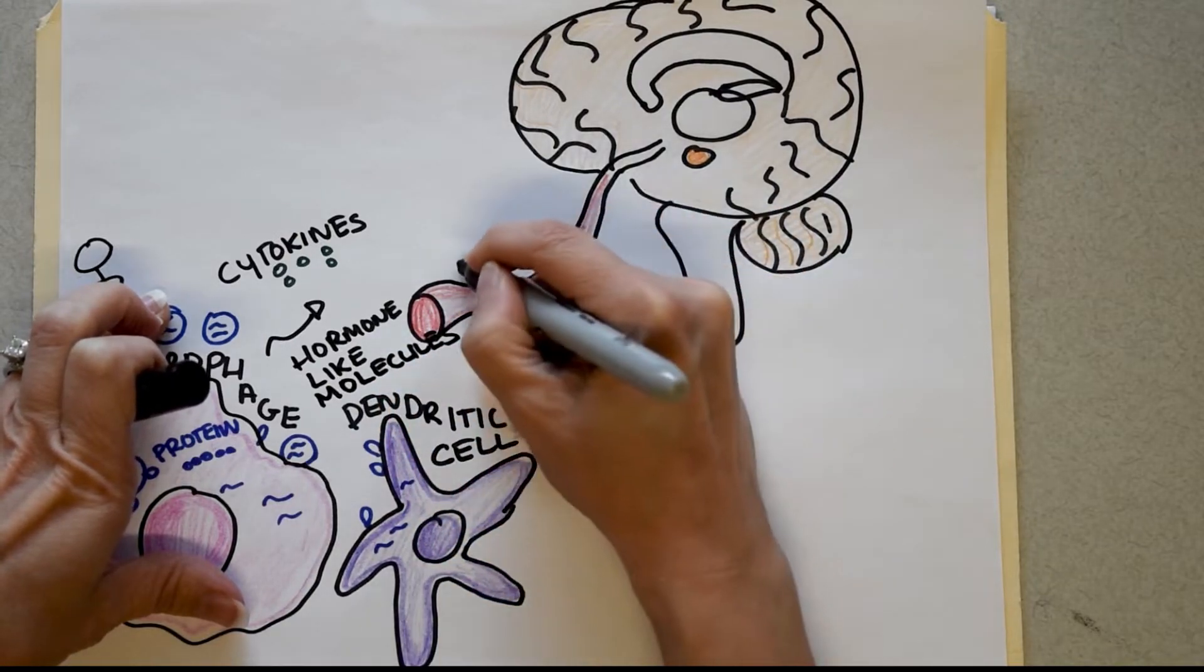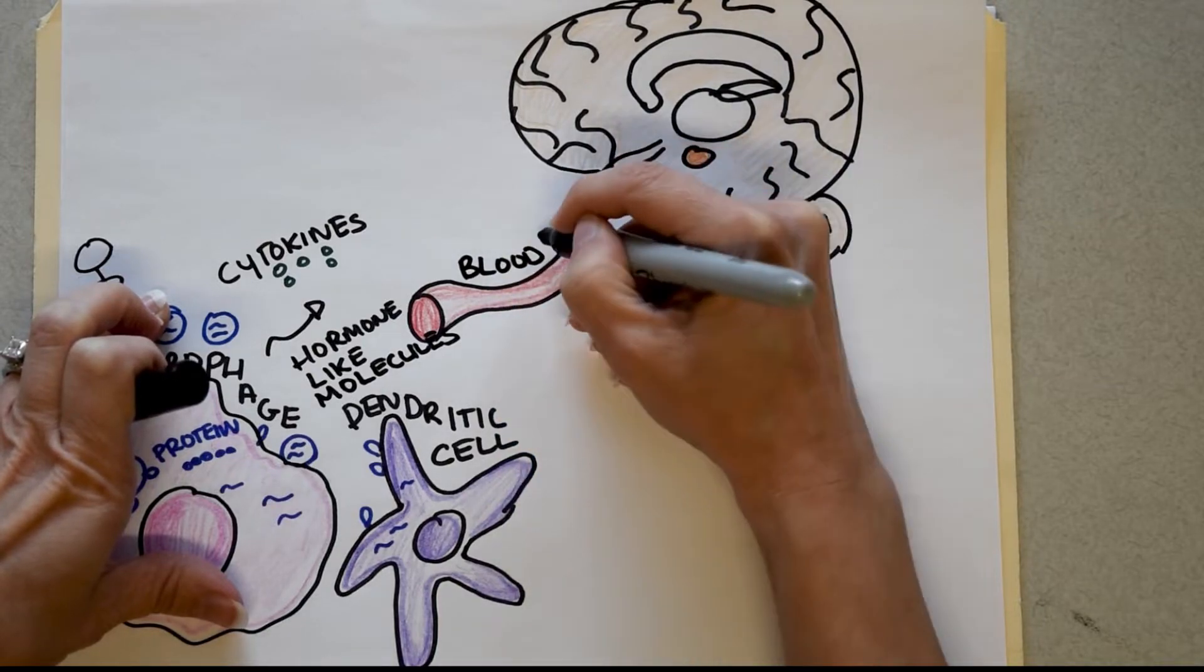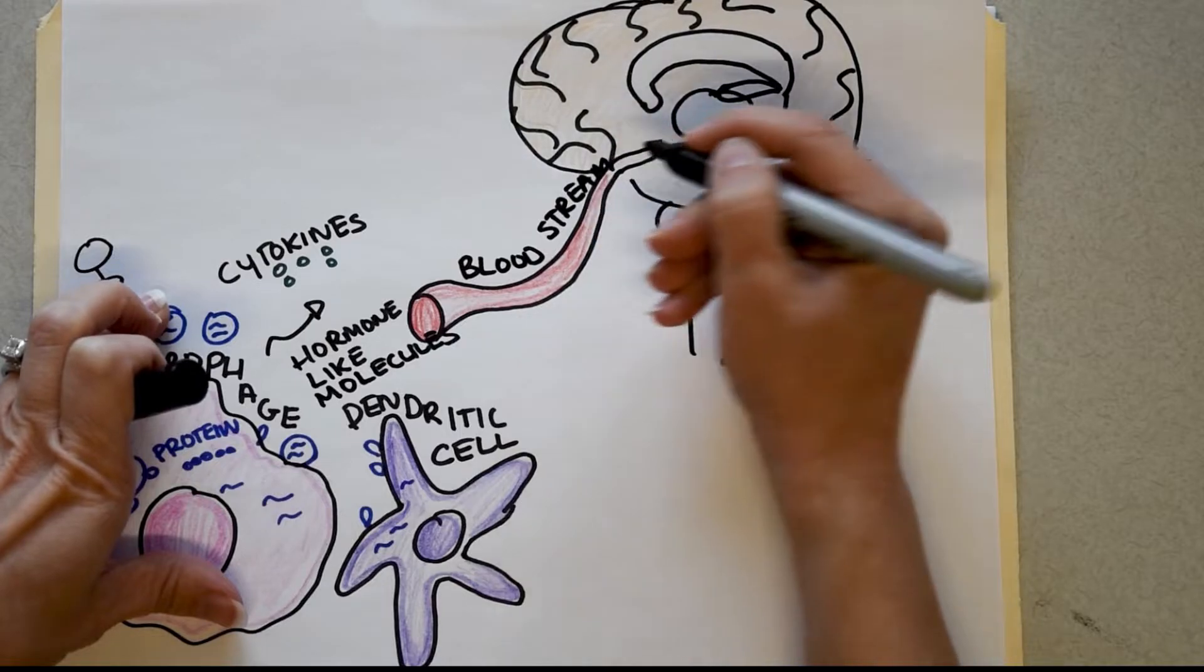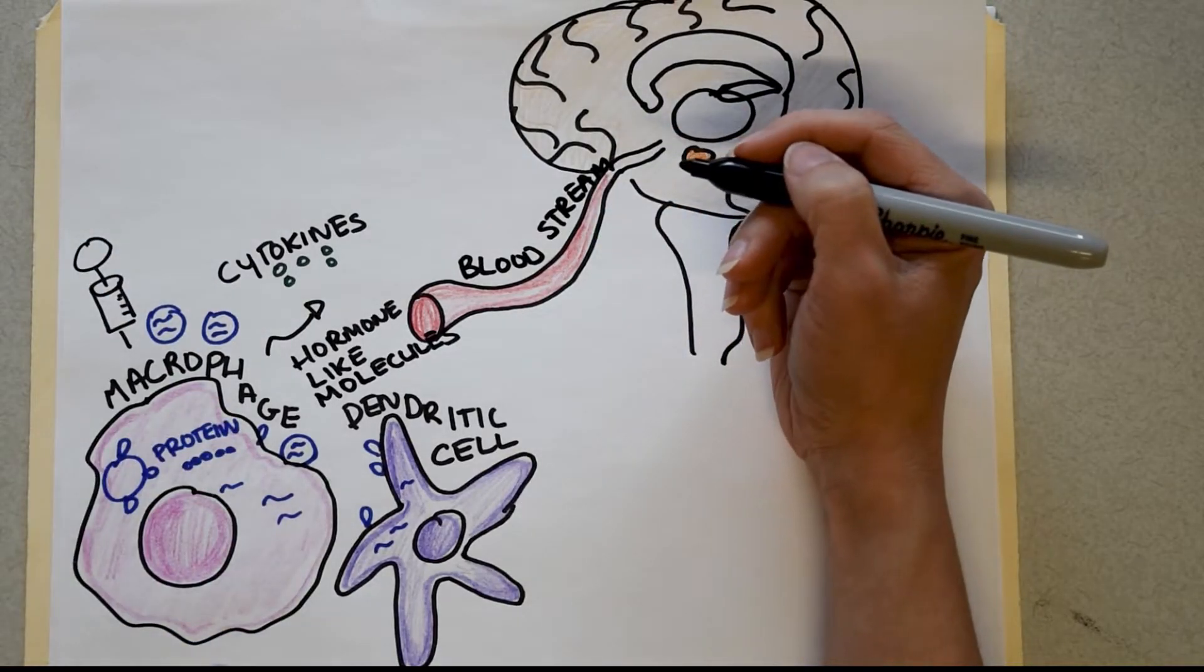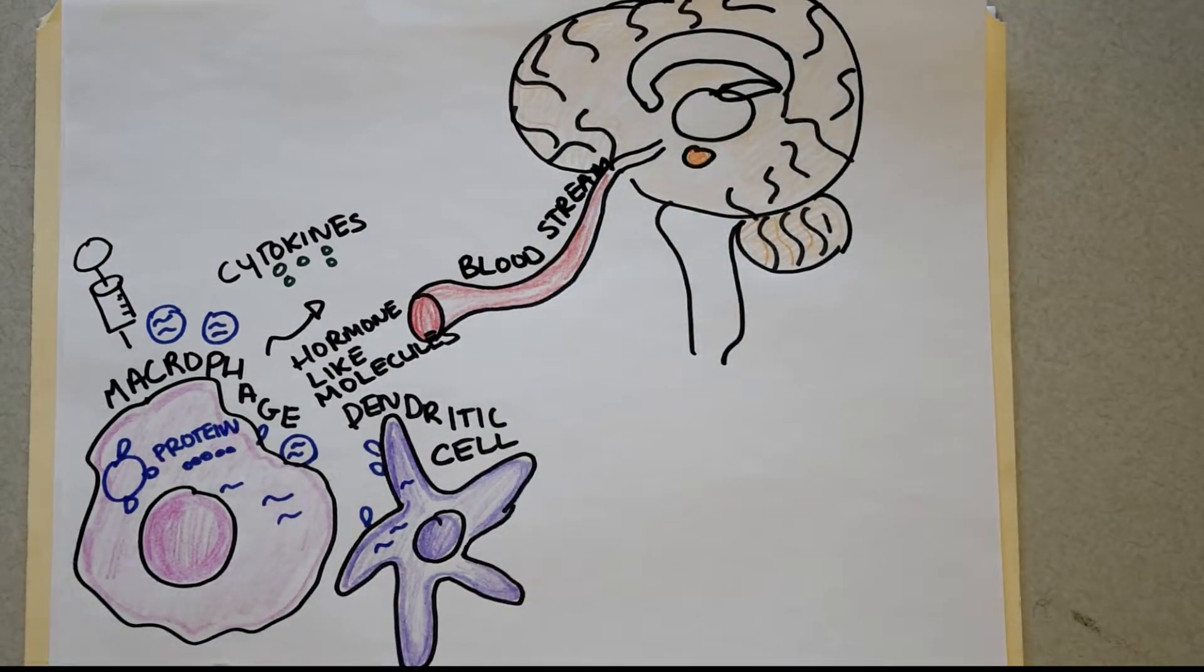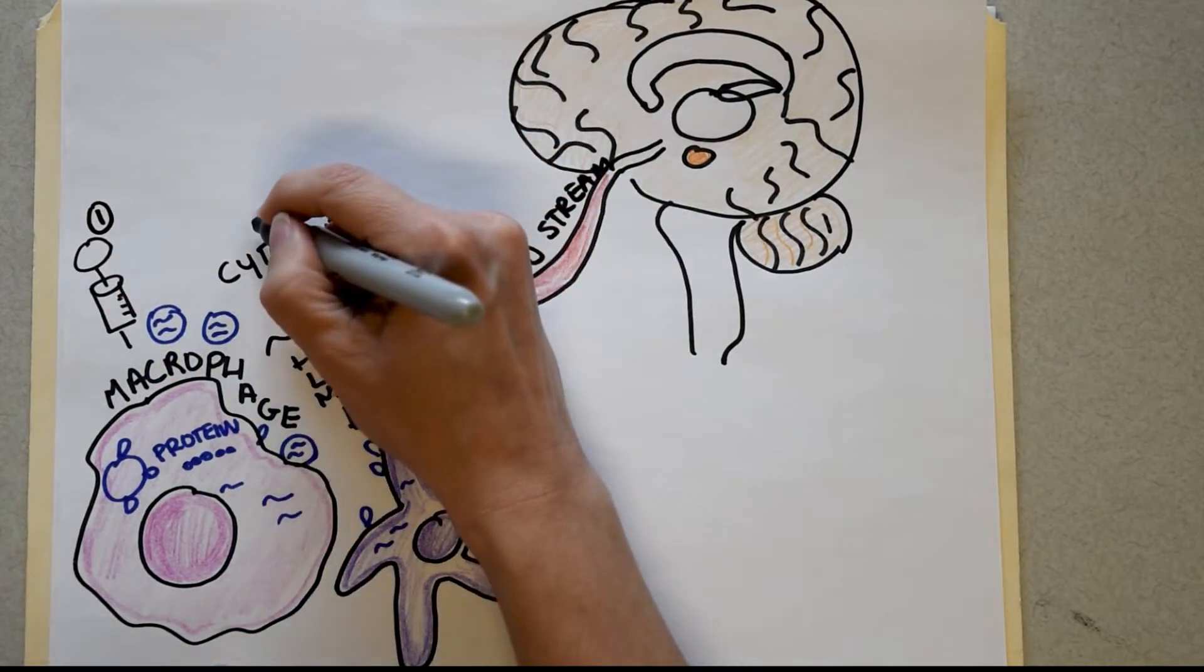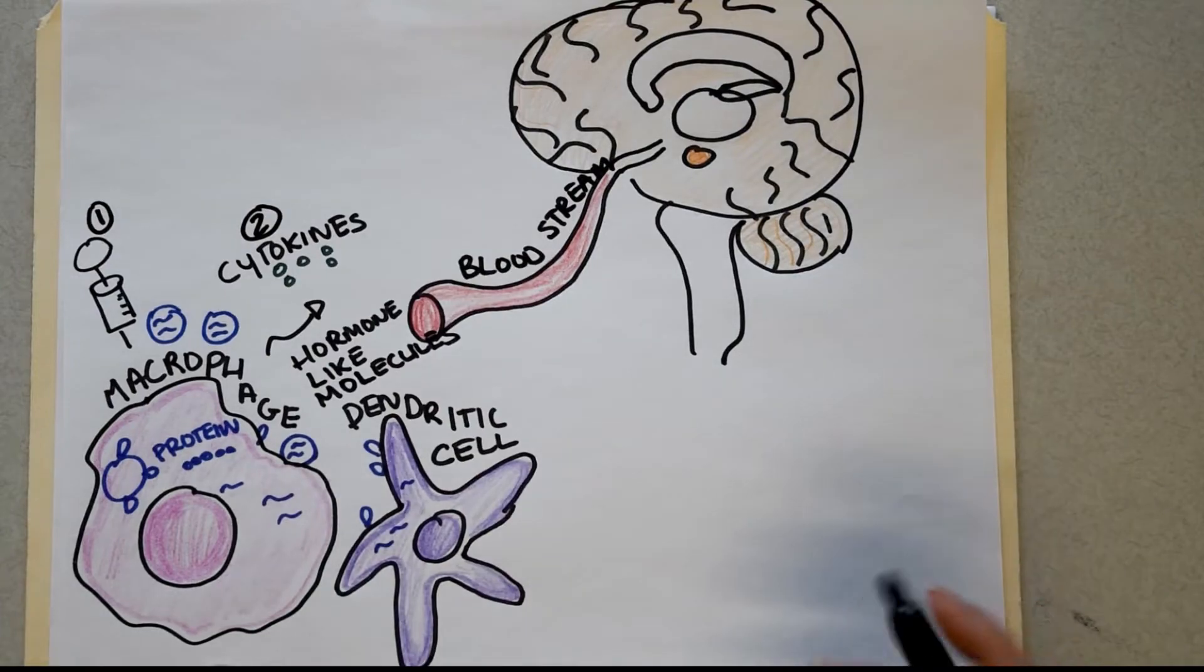All right, so this is your bloodstream right here. And the bloodstream can take this inflammation and bring it to your brain. So here's step one, receive the second vaccine. Step two, your immune cells are going to crank out cytokines and hormone-like molecules, which will enter your bloodstream.